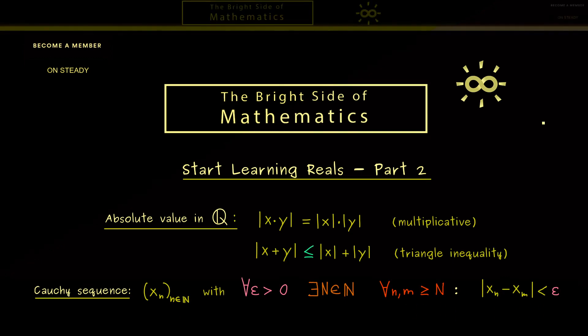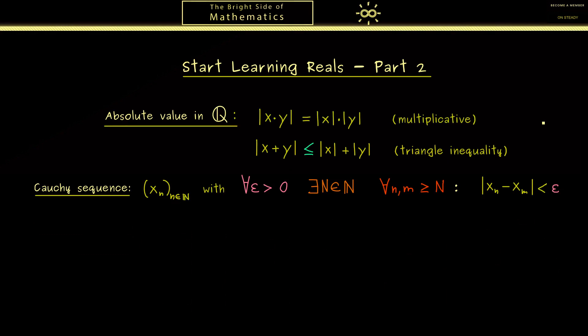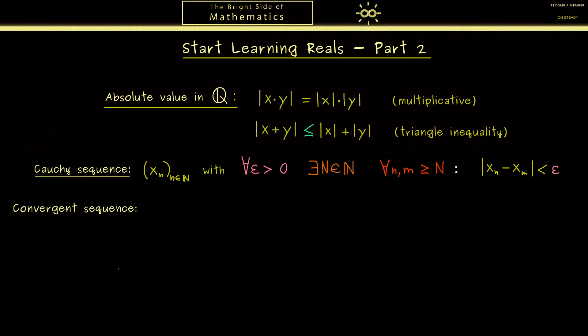Now you might already know that this looks similar to the notion of a convergent sequence. In this case we have a fixed number to which the sequence members get arbitrarily close eventually. So let's call this number a, and then we know there exists an a such that for each ε > 0 there exists an index N such that for all indices n ≥ N we have that the distance xₙ to a is less than epsilon. Of course in this case the number a is called the limit of the sequence.